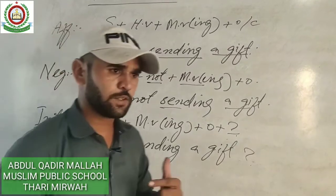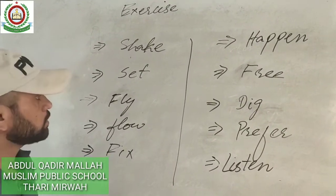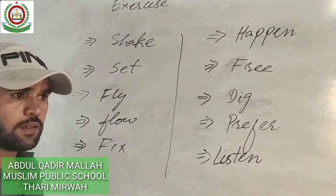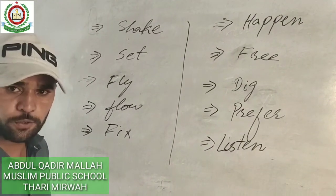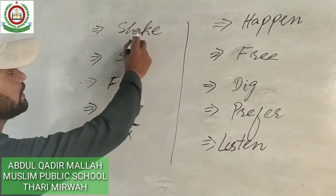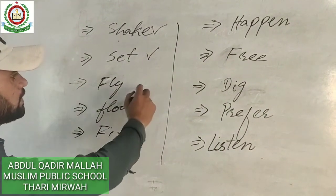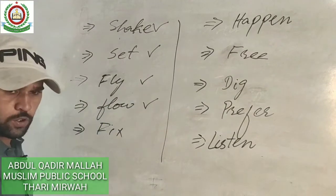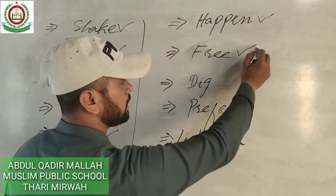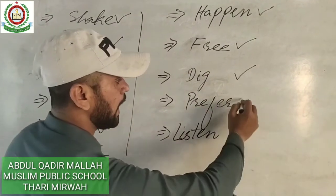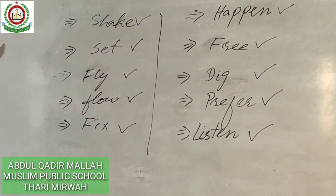Now here is an exercise for you. You have to make the fourth -ing forms of the following verbs using the rules you have learned: shake, set, fly, flow, fix, happen, free, dig, prefer, listen. Form the fourth -ing form of each of these main verbs. Thank you.